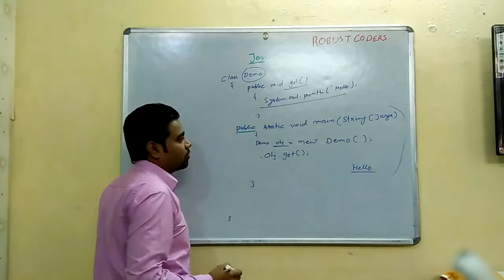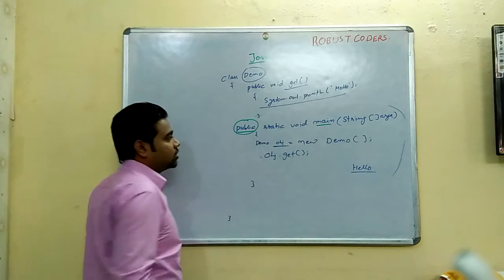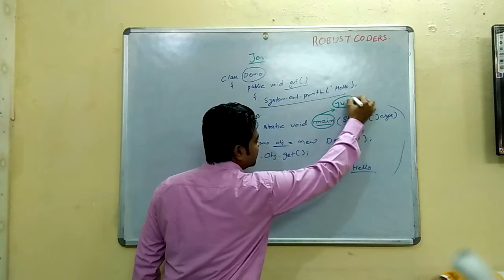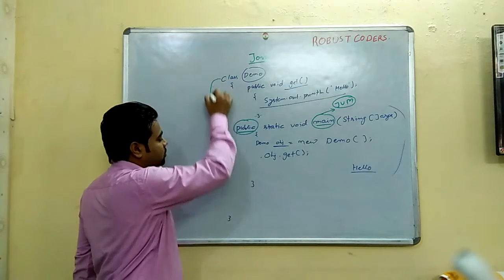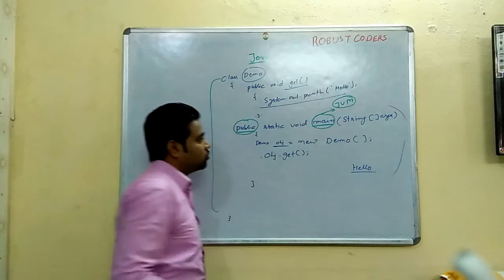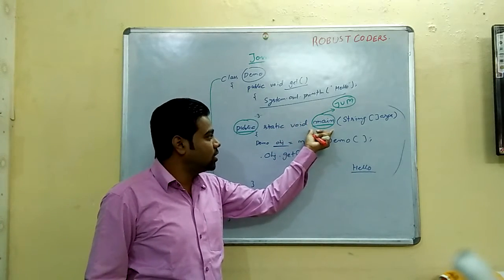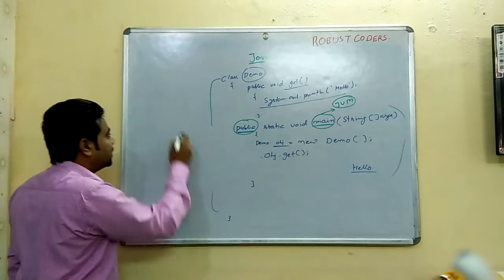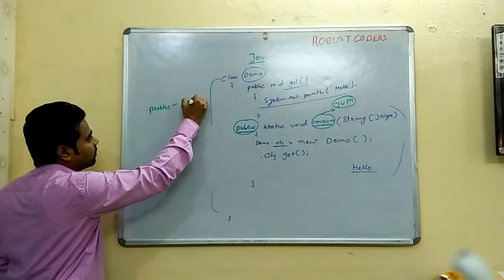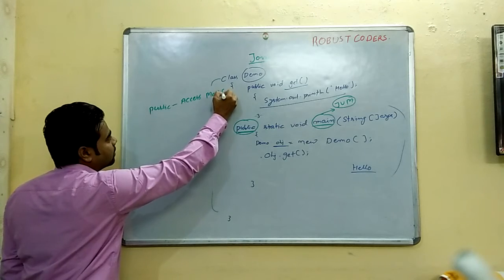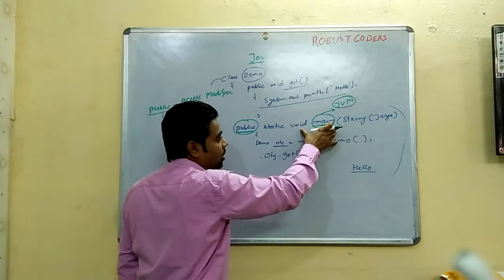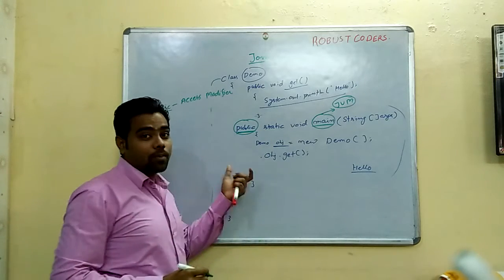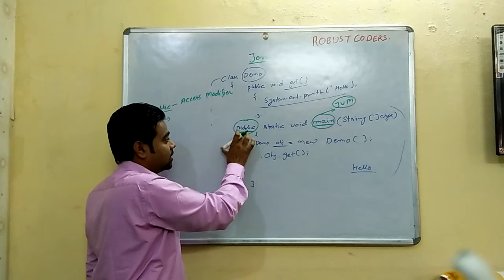First of all, why is the main method public? The main method is called by the JVM - Java Virtual Machine. JVM needs to find and execute the main method. The public access modifier means that the main method is accessible from anywhere. That is why the main method's access modifier is public.